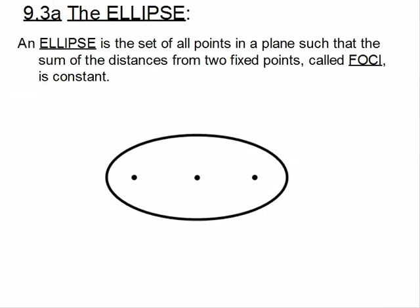Let's look at the definition of an ellipse. We're in section 9.3, the first half. An ellipse is the set of all points in a plane such that the sum of the distances from two fixed points called foci is constant. So we construct our ellipse from two different focal points — each one is called a focus, and together the plural is foci.